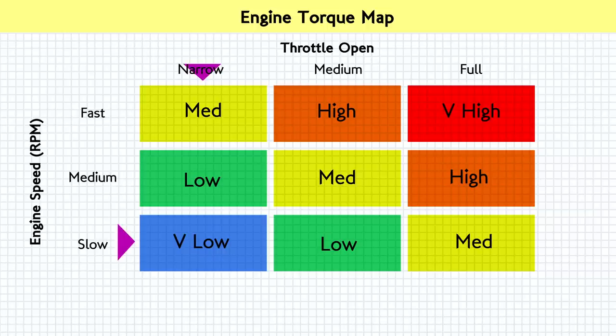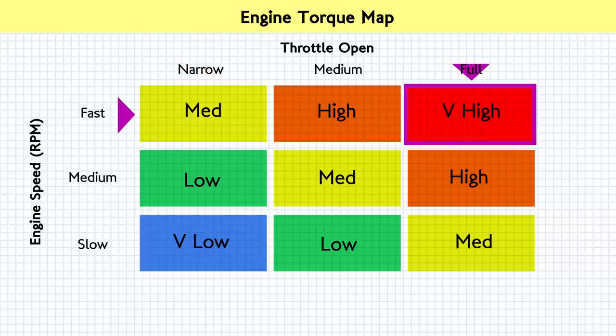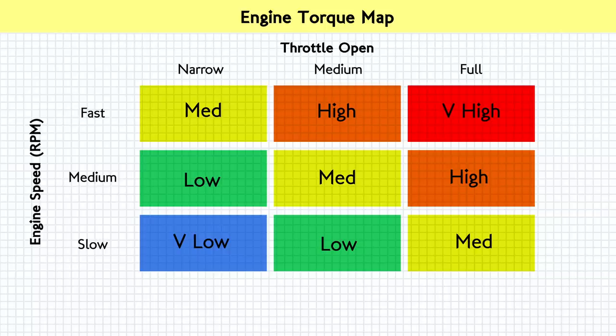the map tells us the engine will be producing a small amount of torque. Full throttle at high RPM produces a large amount of torque, and so on. We just draw from the two inputs to find our output torque. You get the idea.